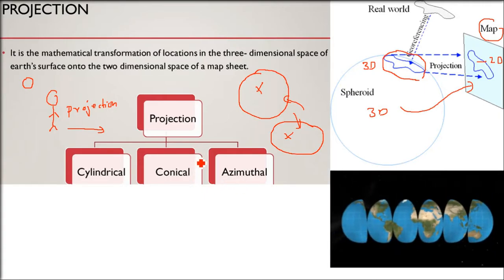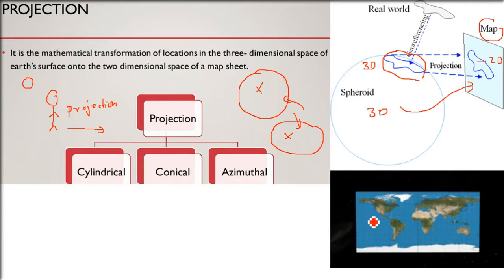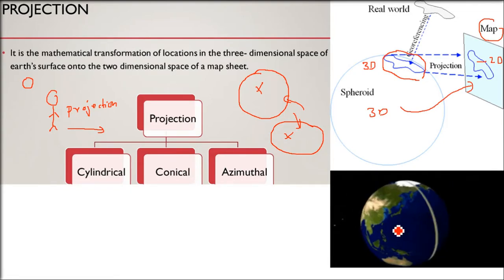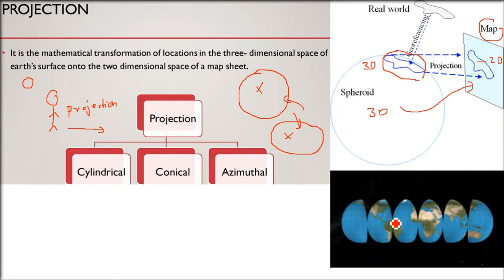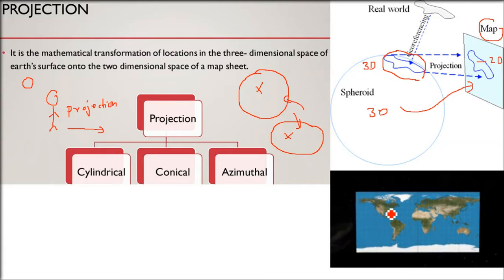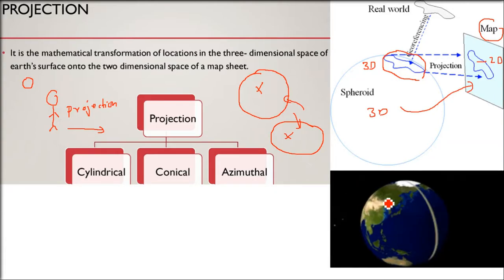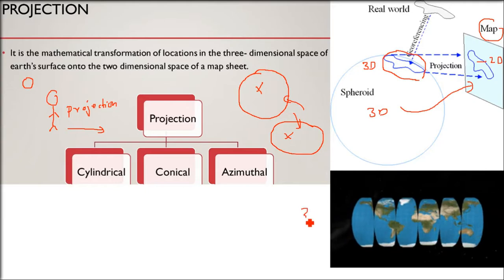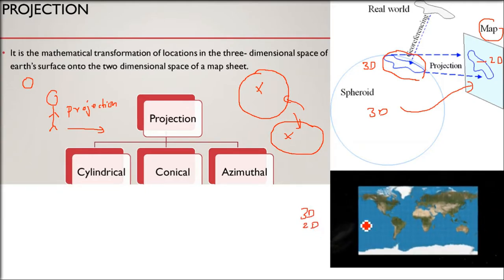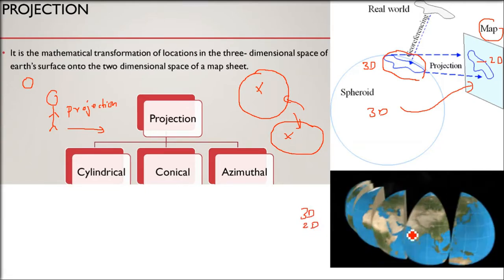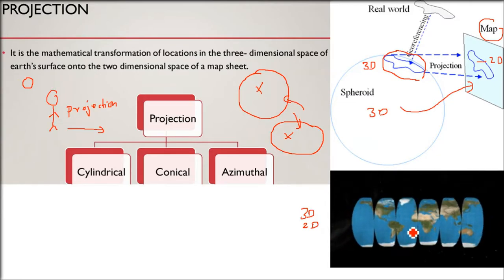So you will ask why there are so many. See, earth as I said is not a proper shape. So in order to model it and show it on the actual plane, we cannot have a single shape that covers it all.